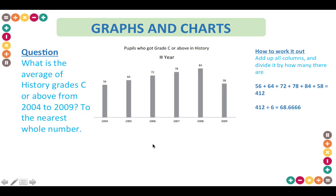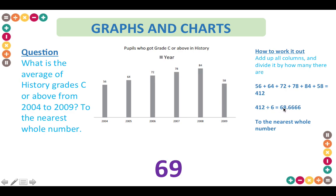Because the numbers after the decimal are above 5, you round up to 69. Whereas if those numbers were below 5, you would keep it as 68. Since they are higher than 5, you need to round the number up.